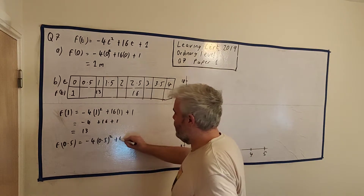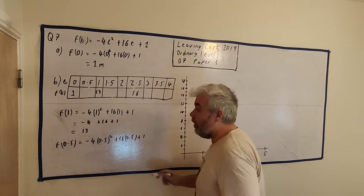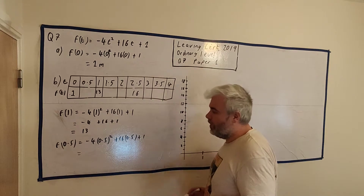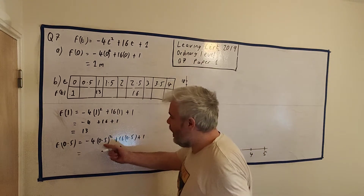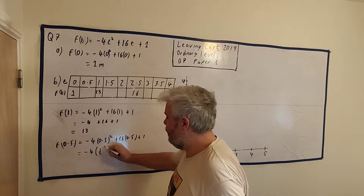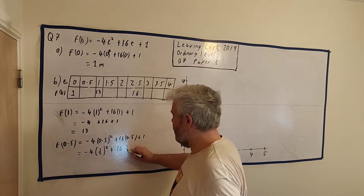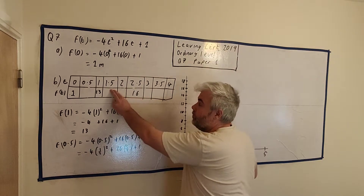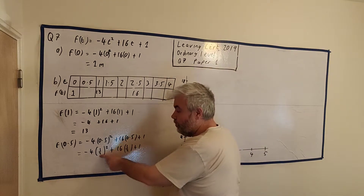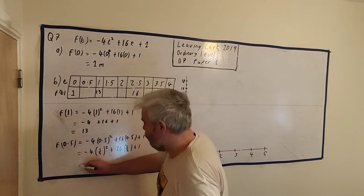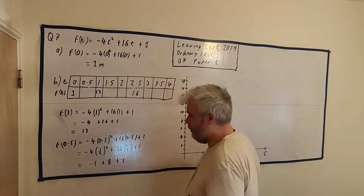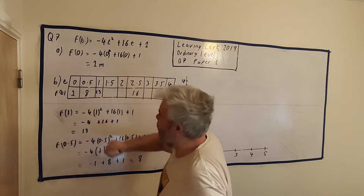For f(0.5): minus 4 times 0.5 squared, plus 16 times 0.5, plus 1. I find it easier to work with fractions. Using a half: minus 4 times (1/2) squared is minus 4 times 1/4 = minus 1. Then 16 times a half is 8, plus 1. So this becomes 8. The answer here is 8. I have the answers on a page — we got the first three right.